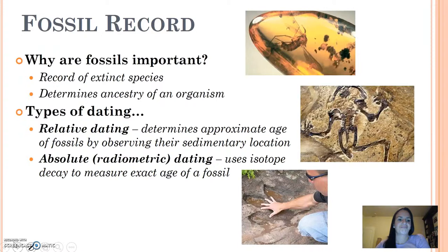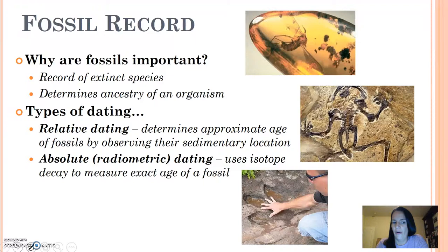When we talk about fossil record, first of all, why are fossils important? Why do we even care? Well, they give a record of extinct species, but they also help you determine the ancestry of an organism. There are also two types of dating you should know about: relative dating and absolute dating.